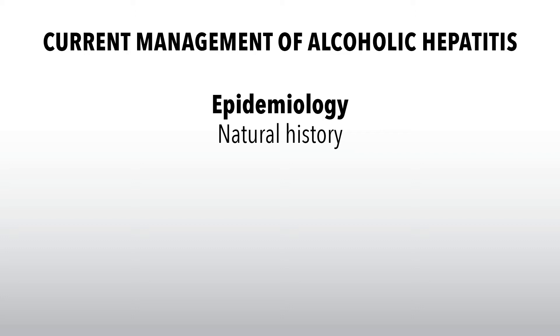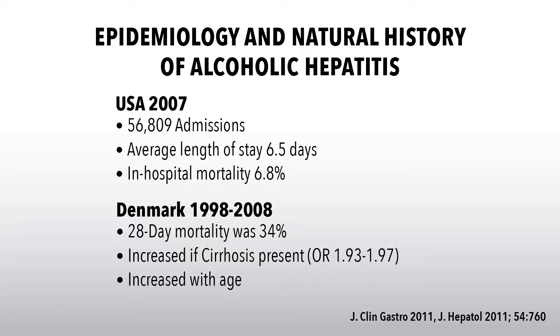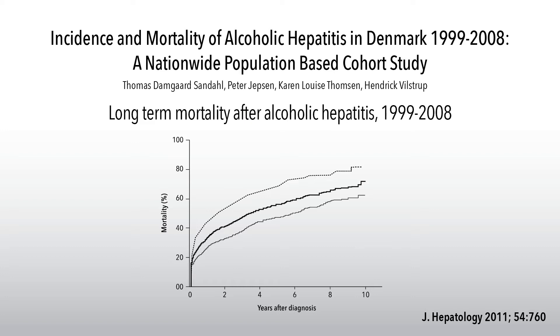Alcoholic liver disease accounts for about half of the deaths from chronic liver disease globally. Looking at USA data from 2007, there were nearly 60,000 hospital admissions for alcoholic hepatitis. The average length of stay was 6.5 days and the in-hospital mortality rate was nearly 7%. In Denmark, over a 10-year period through 2008, the 28-day mortality was 34%, increased further if cirrhosis was present, and mortality increased with age.